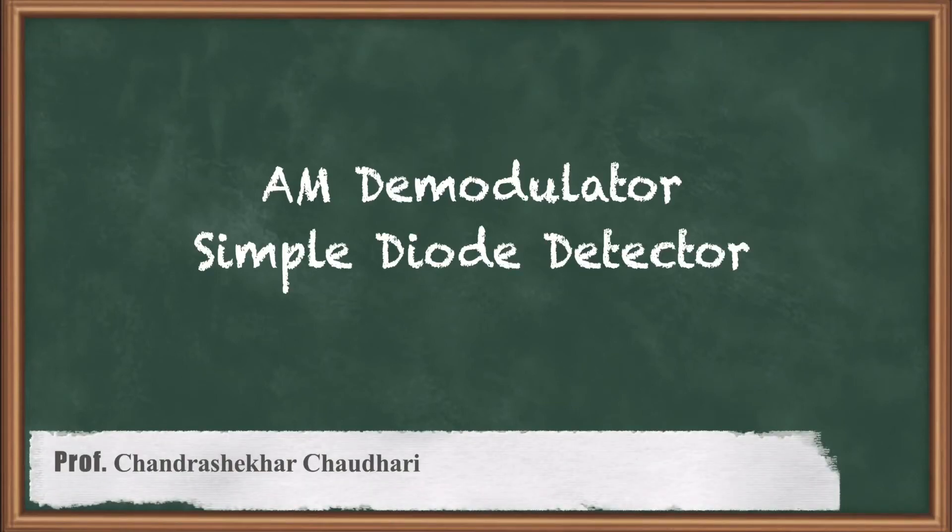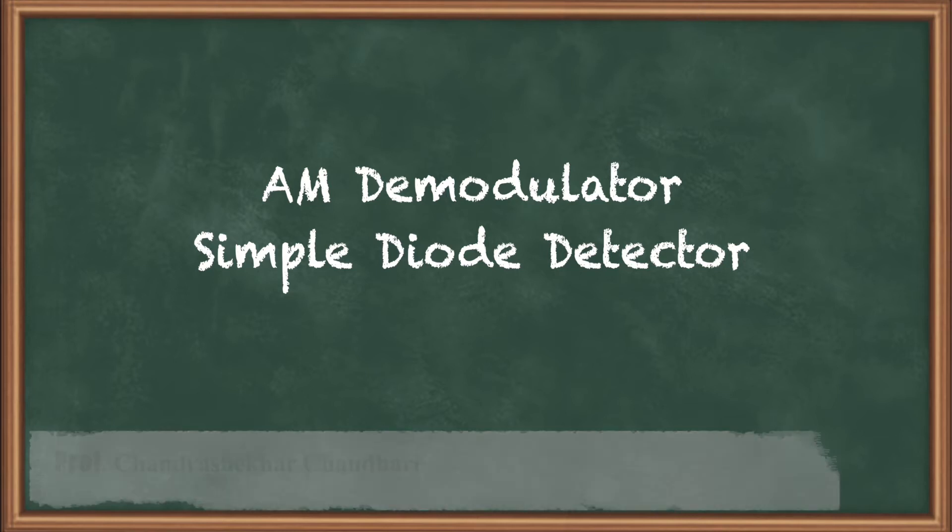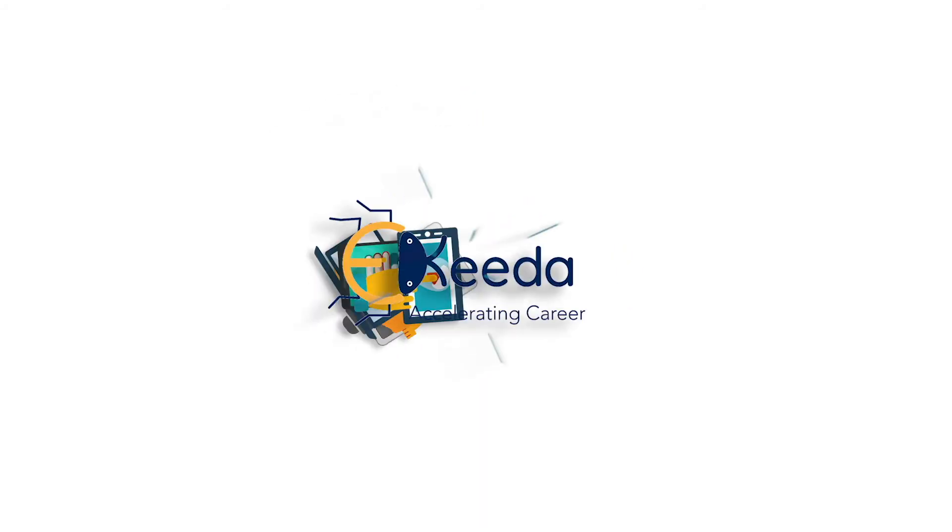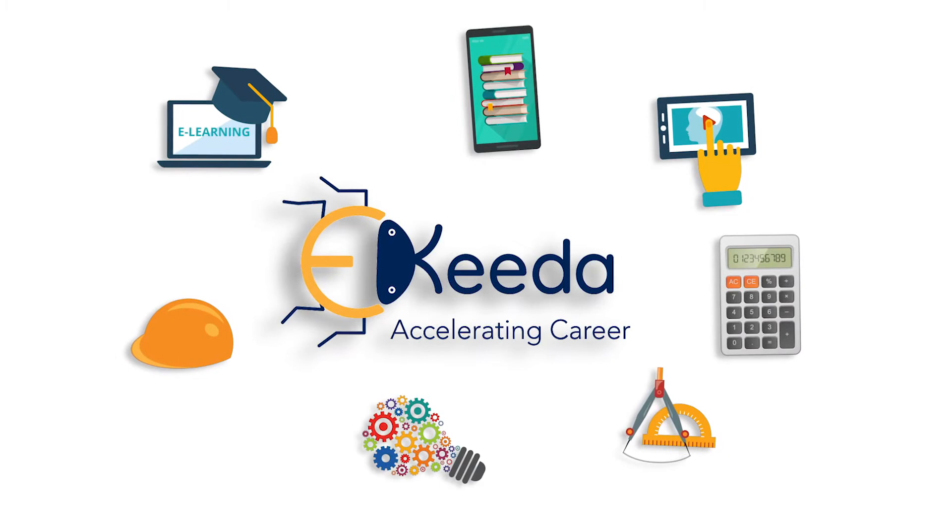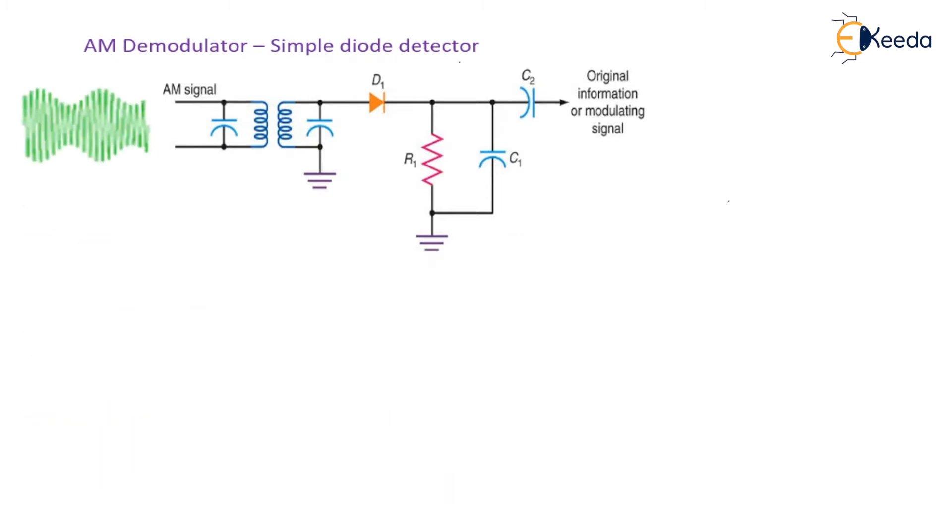Hello friends, now we will see the AM demodulator. In this lesson, we're going to learn about the simple diode detector. In this simple diode detector circuit shown here, the AM signal is applied at the input. This is the AM envelope applied at the input.